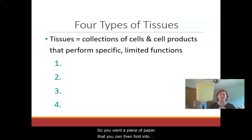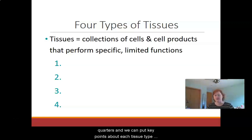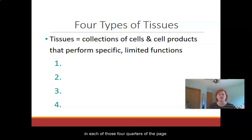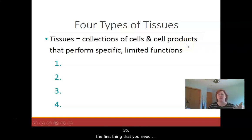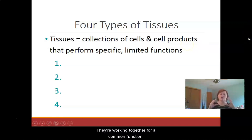You'll want a piece of paper that you can fold into quarters, and we can put key points about each tissue type in each of those four quarters of the page. The first thing you need to remember is that tissues are a collection of cells that are working together for a common function.